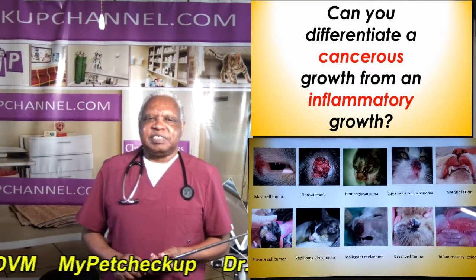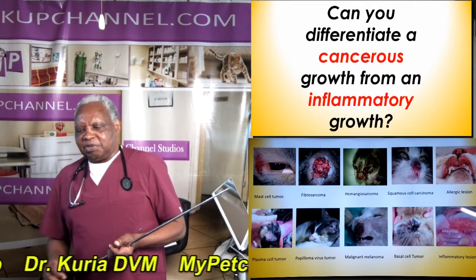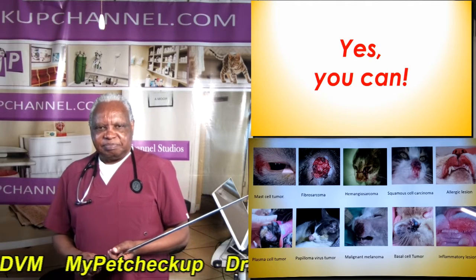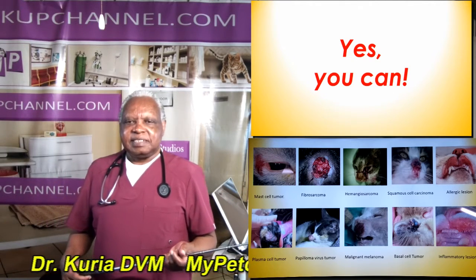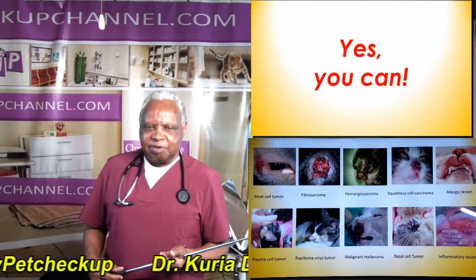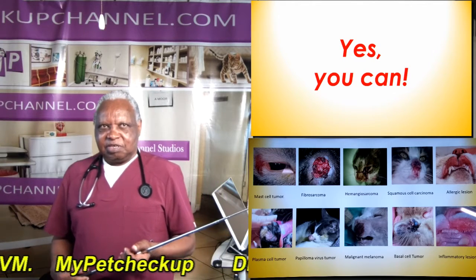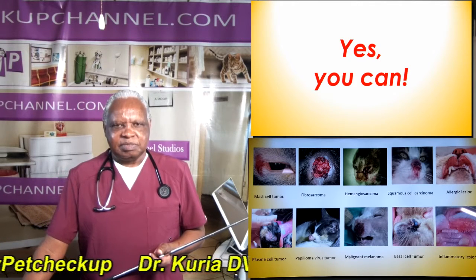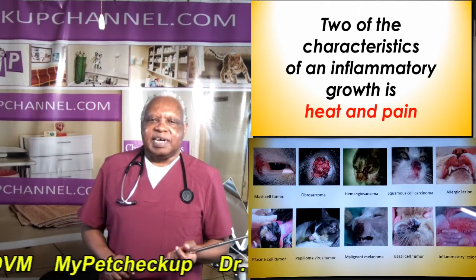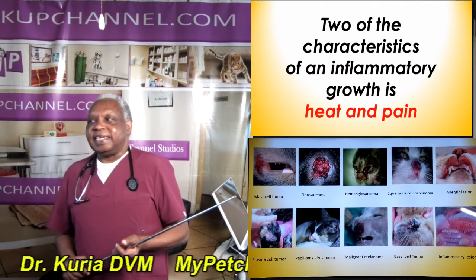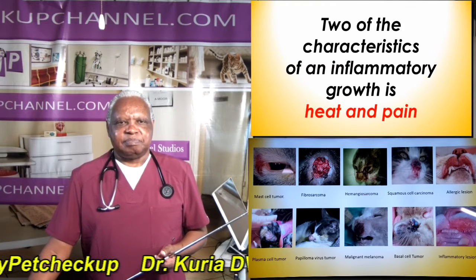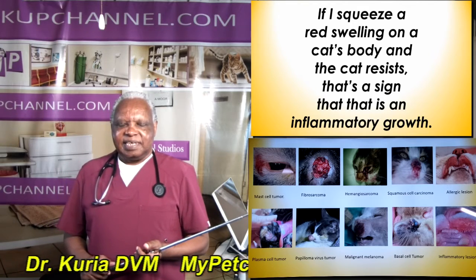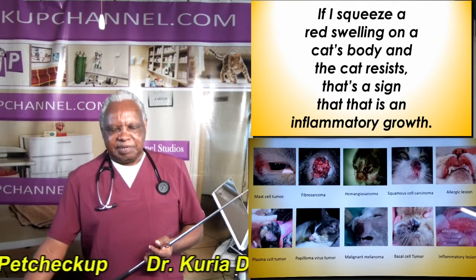Can you differentiate a cancerous growth from an inflammatory growth? Yes, you can. As I said earlier, cancer starts from inflammation. Inflammatory growth turns cancerous if it is not treated. Two of the characteristics of an inflammatory growth are heat and pain. If I squeeze a red swelling on a cat's body and the cat resists, that's a sign that that is an inflammatory growth.